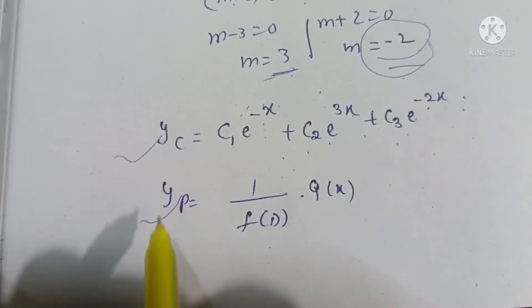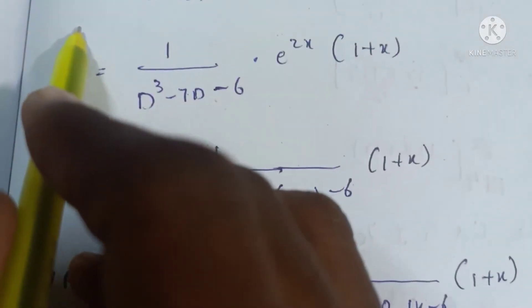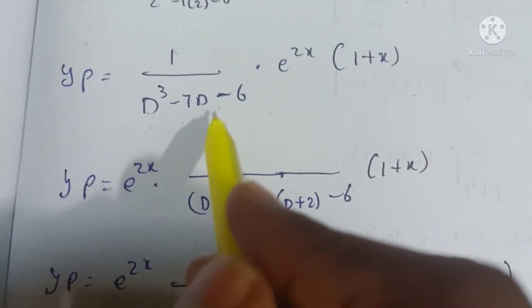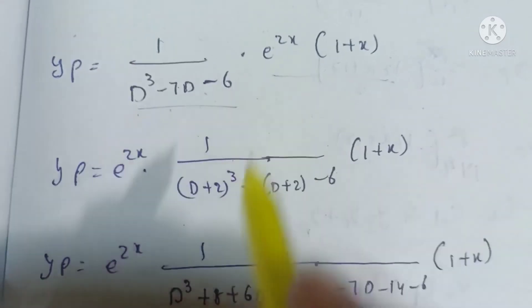For the complementary solution, now the particular solution: yp = 1/f(D) × Q(x). Therefore yp = 1/(D³ - 7D - 6) × e^(2x)(1 + x). This is the Q(x) value and f(D) value.